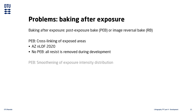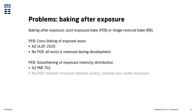Other resists use the PEB to average out the wave intensity profile of the exposure light — an example is AZ-MIRS 701. If the PEB is missing, the development may still work, but the final result will have a reduced sidewall quality in the resist pattern. It could also appear to be underexposed.